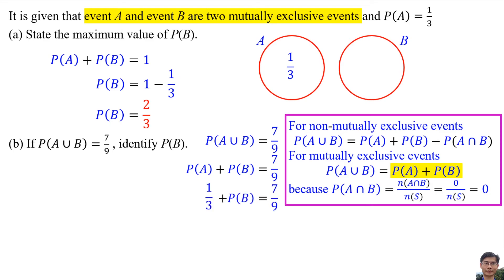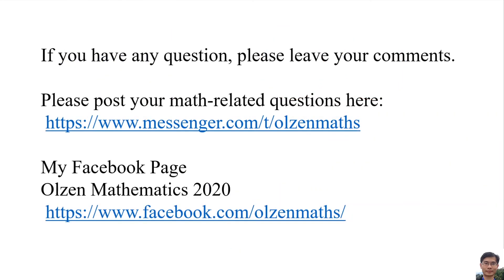So the probability of event B is 7 over 9 minus 1 over 3, which equals 4 over 9. Therefore, the probability of event B is 4 over 9.